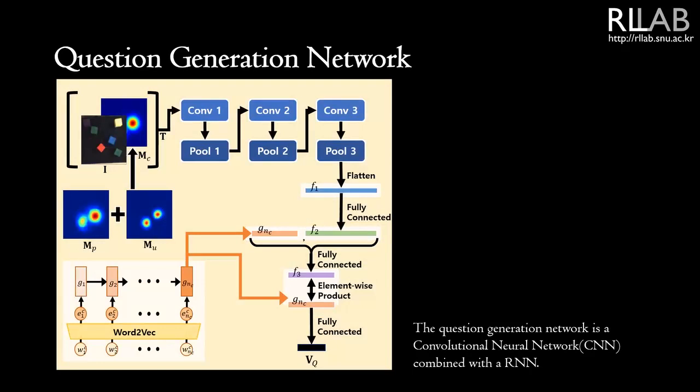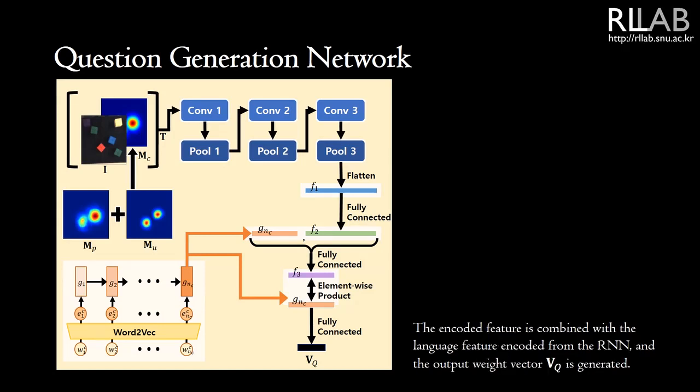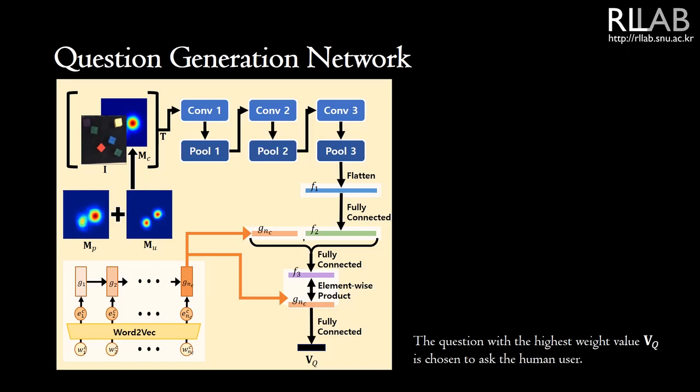The question generation network is a convolutional neural network combined with a RNN. After the CNN processes the information in the image and the generated heatmaps from the text-to-pickup network, the encoded feature is combined with the language feature encoded from the RNN, and the output weight vector is generated. The question with the highest weight value is chosen to ask the human user.